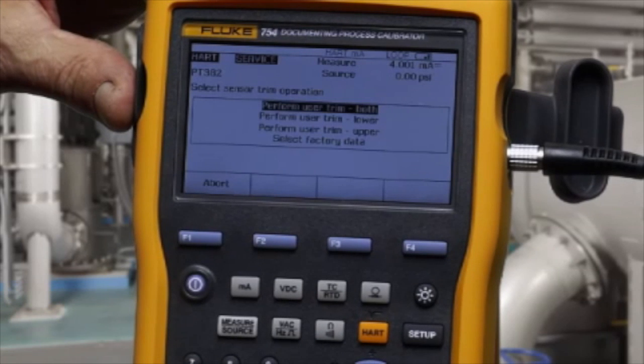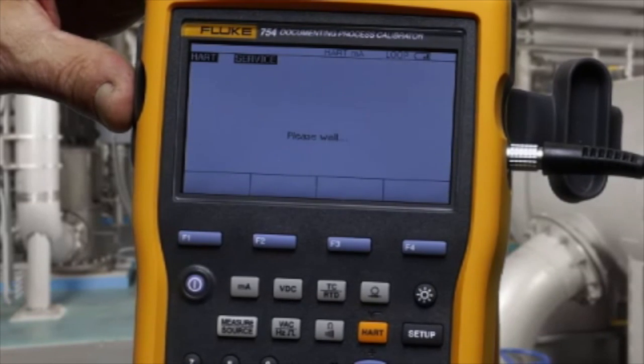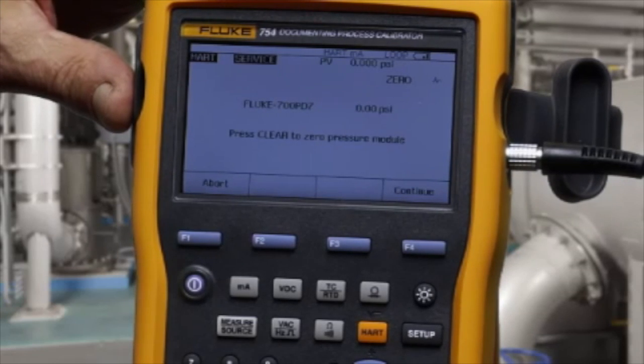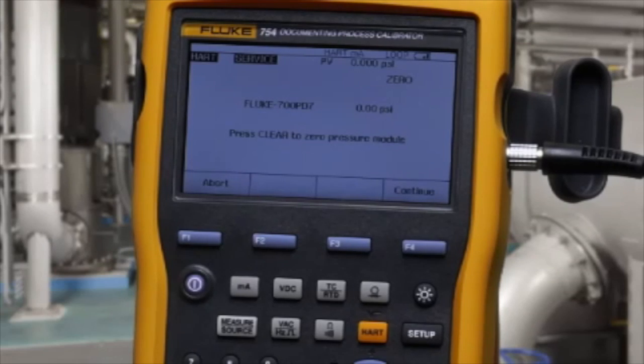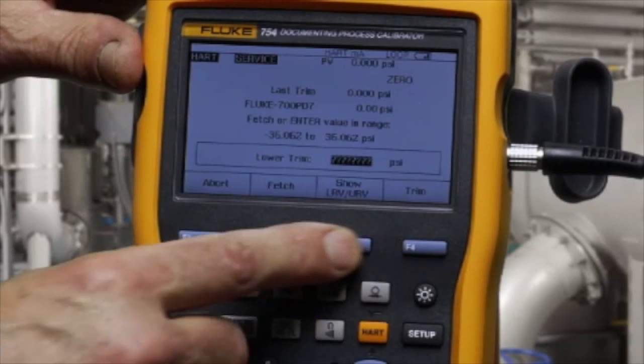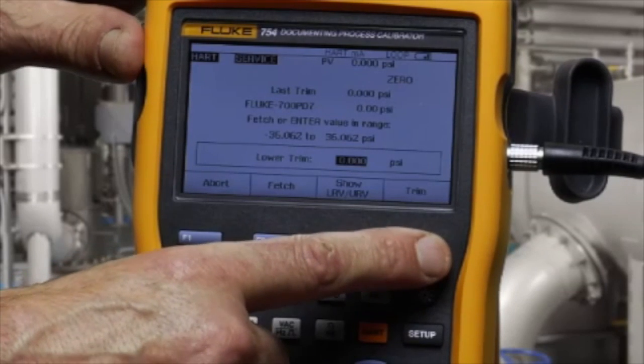Lastly, you can adjust the sensor, the input to the transmitter. Fetch the zero PSI value and trim.